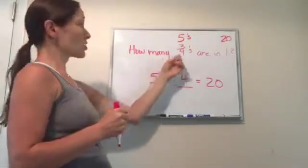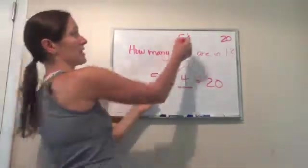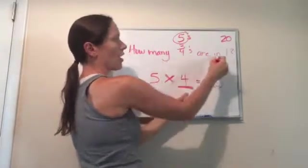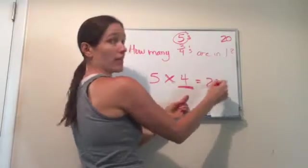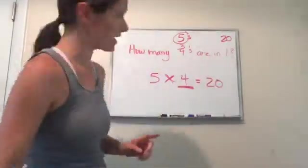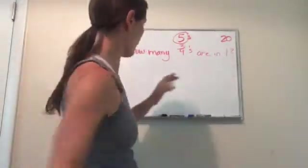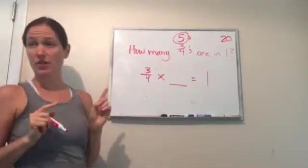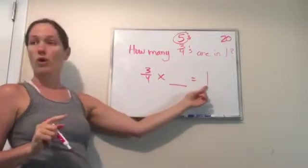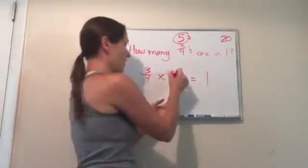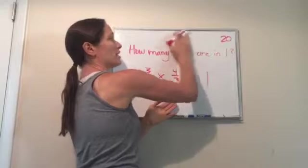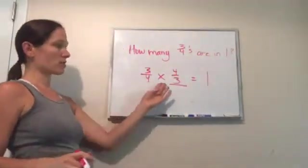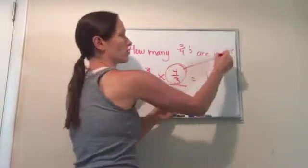Basically what I'm doing is taking five times something equals twenty. So I'm saying to you, three-fourths times what equals one? And we just reviewed it. What will always make it equal one? Four-thirds, very good. So when you see this problem, how many three-fourths are in one, don't freak out. It basically just means you need the reciprocal. The answer is four-thirds. Got it?